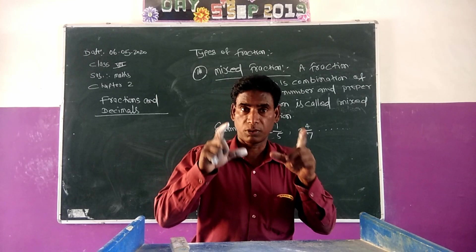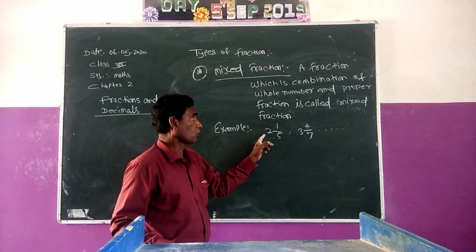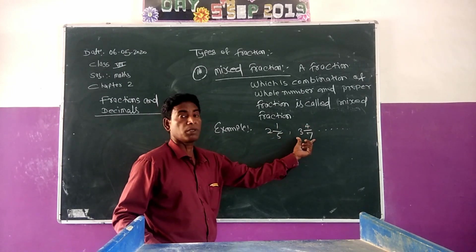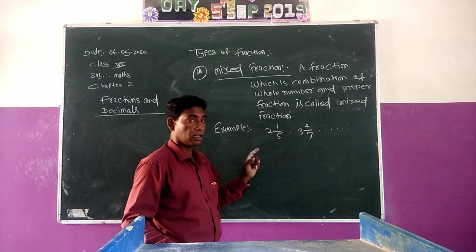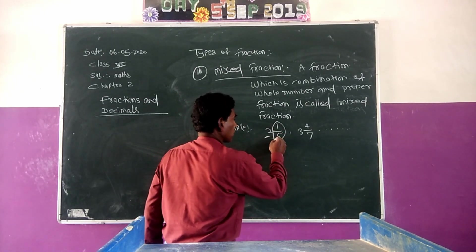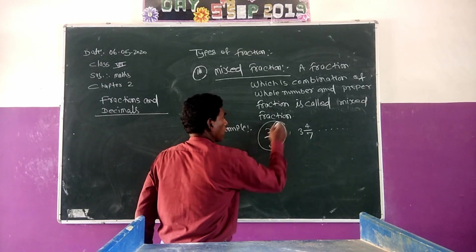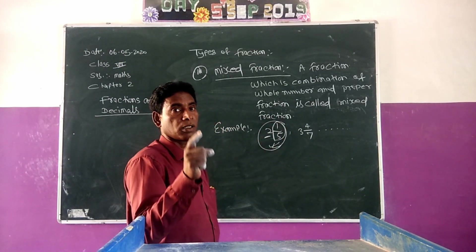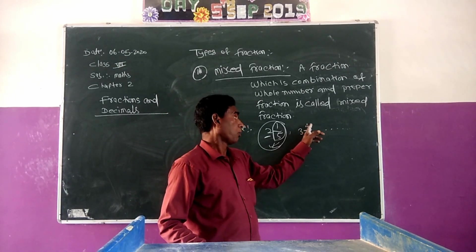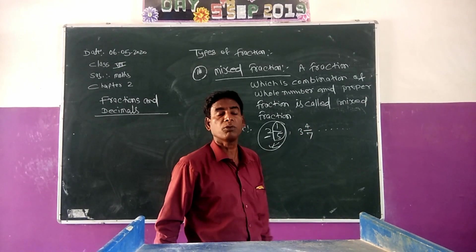A mixed fraction is a combination of a whole number and a proper fraction. Example: 2 and 1 by 5 — it is a mixed fraction. 3 and 4 by 7 — it is a mixed fraction. Here 2 is the whole number and 1 by 5 is the proper fraction. Similarly, 3 is the whole number and 4 by 7 is the proper fraction, therefore 3 and 4 by 7 is a mixed fraction.